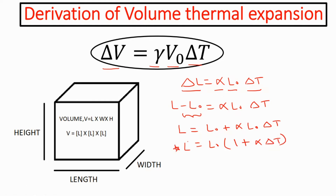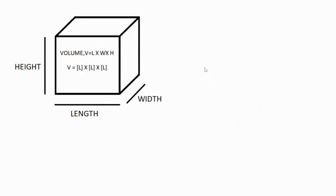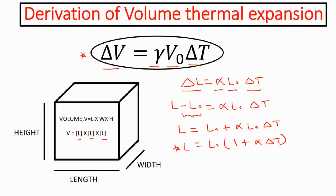We are going to use this equation for deriving the volume thermal expansion. As we already know, the formula for volume is length multiplied by width multiplied by height. Here the dimension for length, width, and height are all L. So the volume equals L multiplied by L multiplied by L.